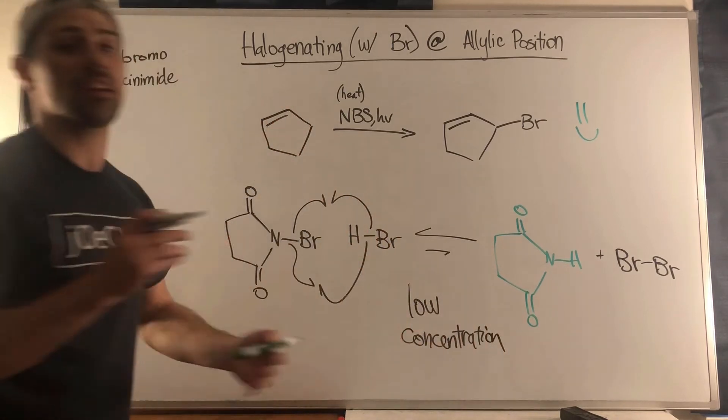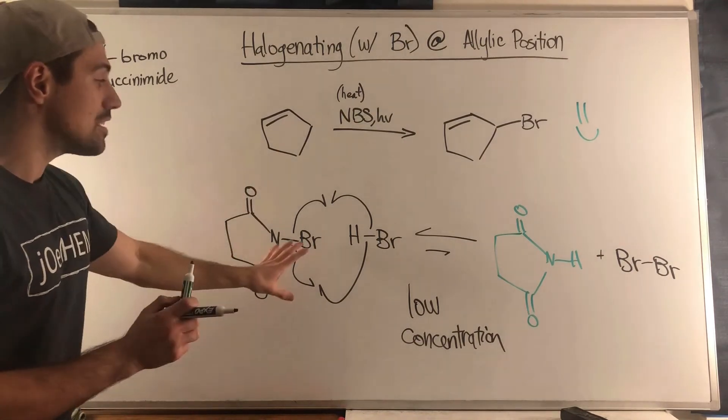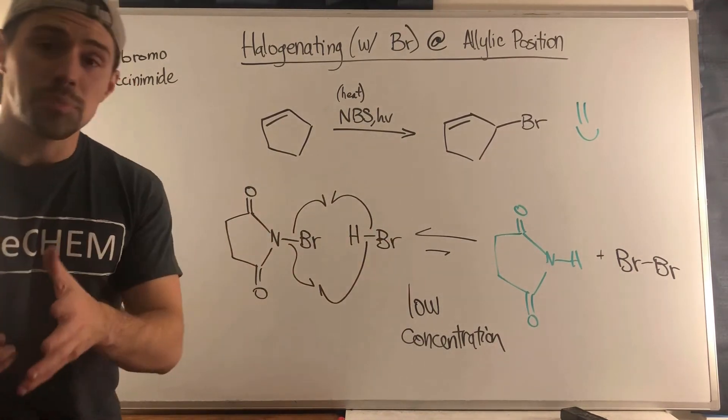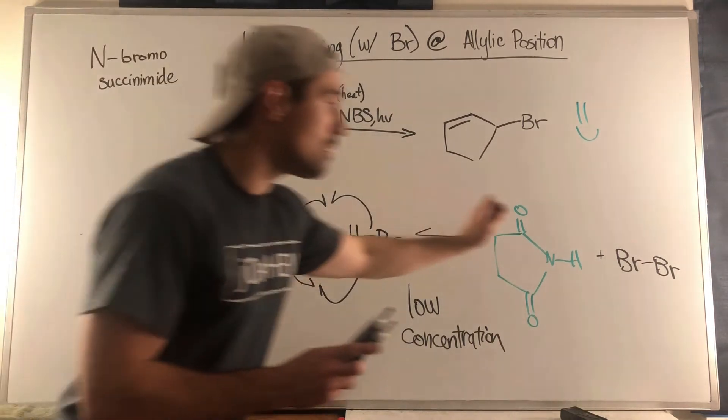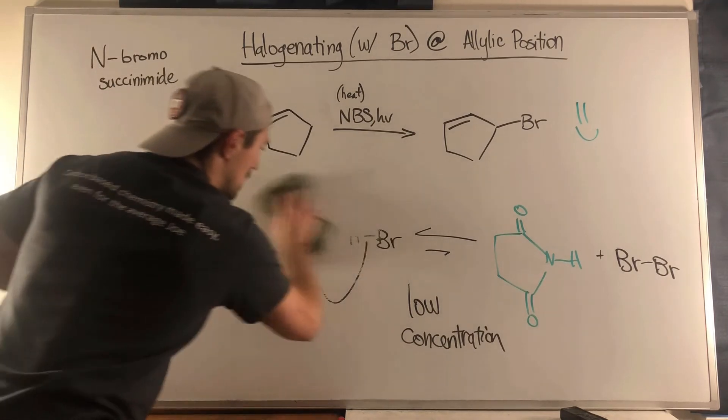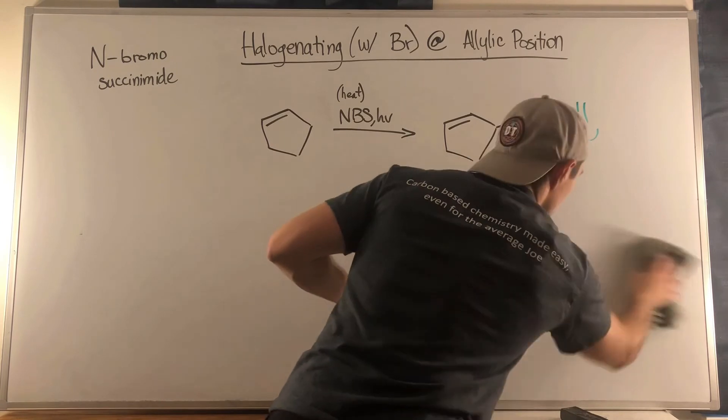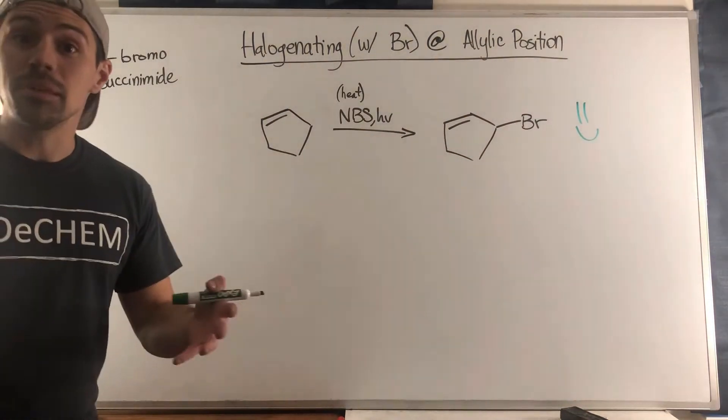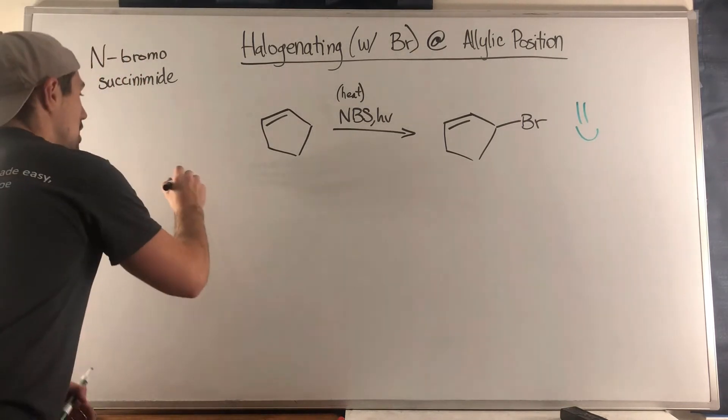Again, this is not super important that you can reproduce these arrows, but I think for your class, if you can just realize that NBS reacts with something, whether it be HBr or something, to just give you little amounts of Br2, then it's business as usual.